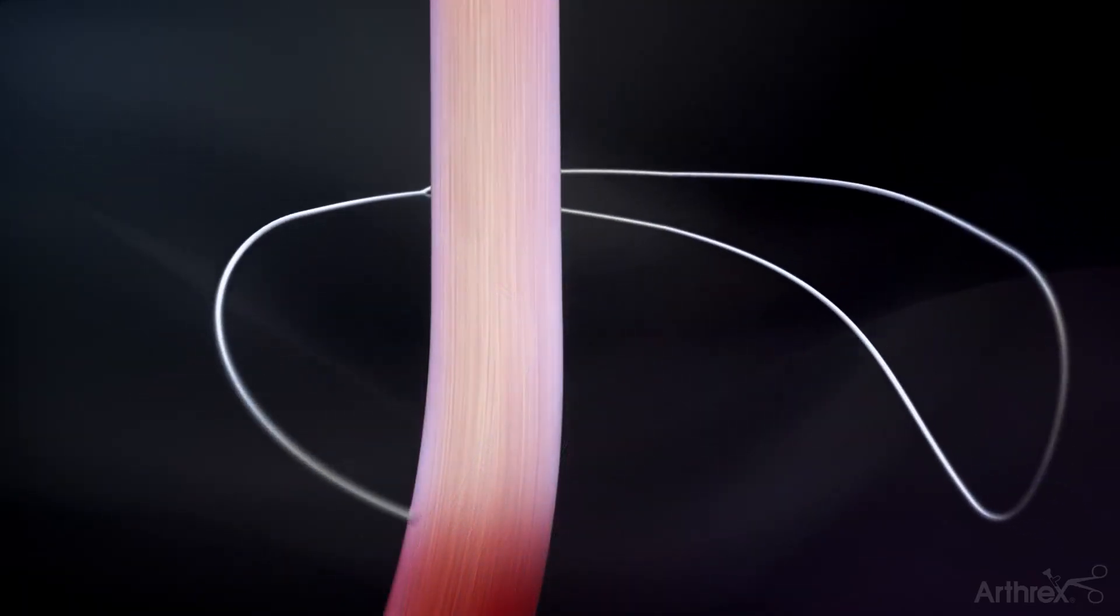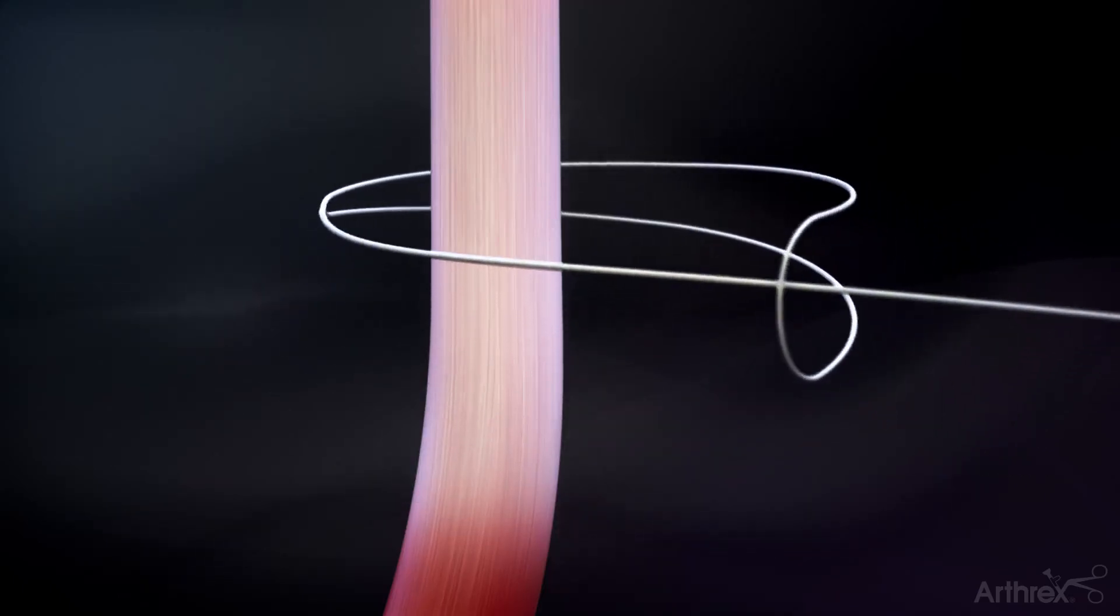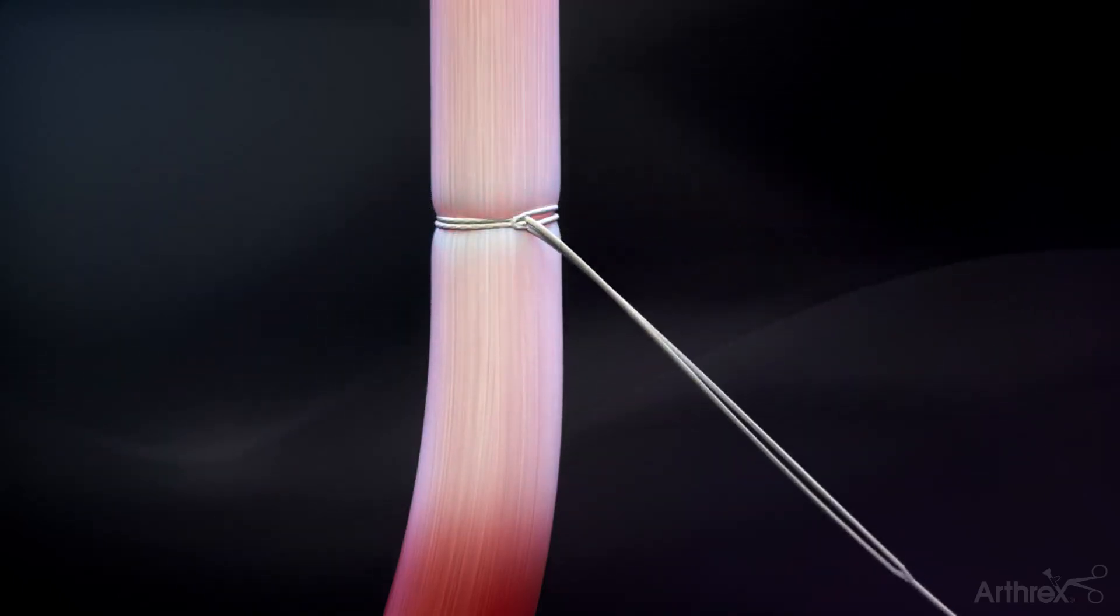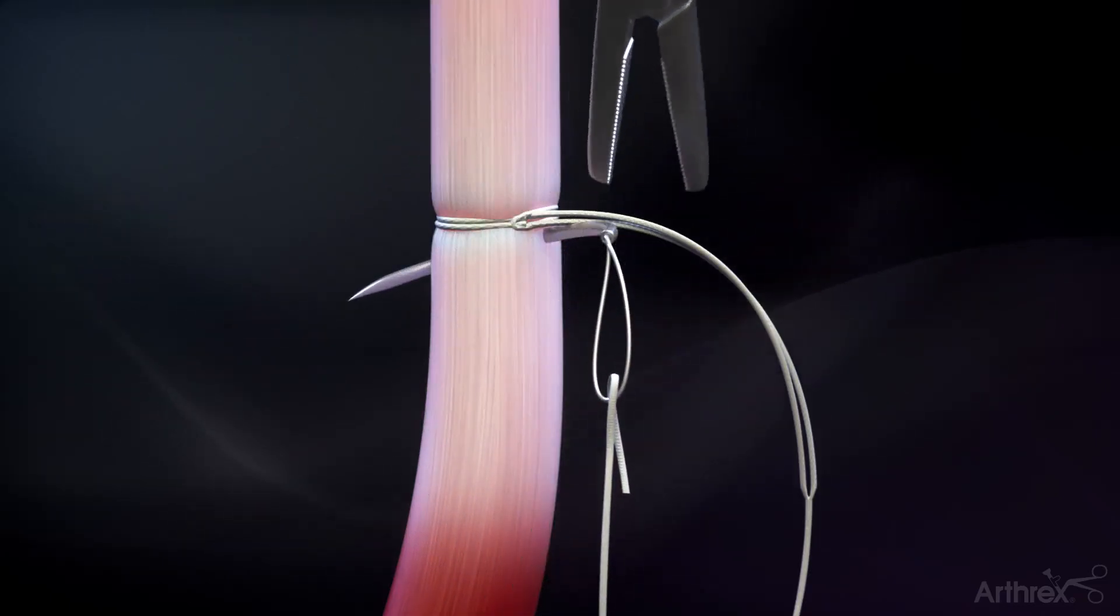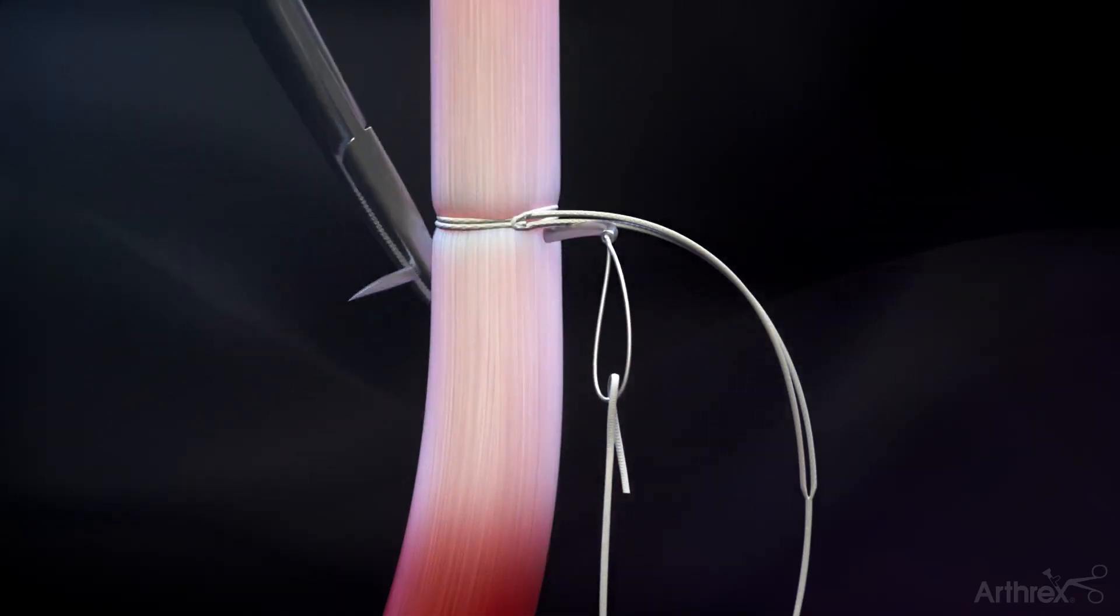Create a loop and tack whip stitch by cinching the No. 5 fiber link around the tendon, approximately 2 centimeters from the musculotendinous junction, and then passing the tail through the tendon, distal to the loop.